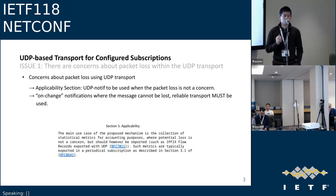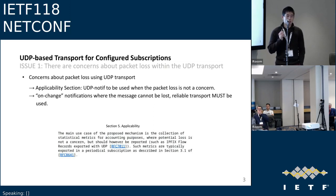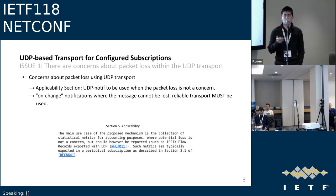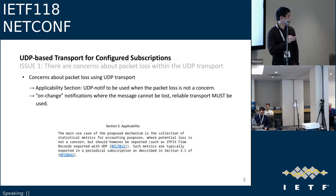First issue: concerns about packet loss given UDP's unreliable nature. An applicability section states that UDP YANG notifications must only be used where packet loss is not a concern — primarily for counters and telemetry data where loss is acceptable. The relevant section has been moved up in the document for visibility.